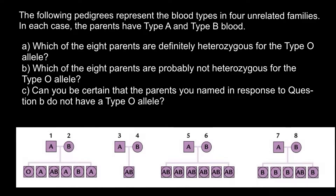Hello and welcome to Nikolai's genetics lessons. Today's problem is the following: the pedigree represents the blood types in four unrelated families. In each case, the parents have type A and type B blood. Question A: which of the eight parents are definitely heterozygous for the type O allele?